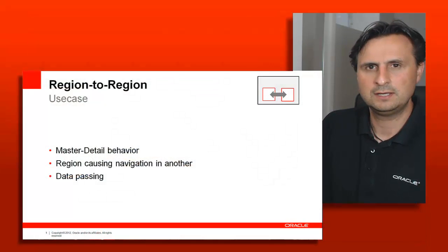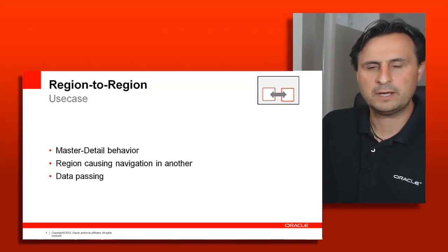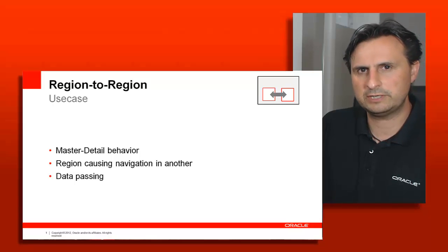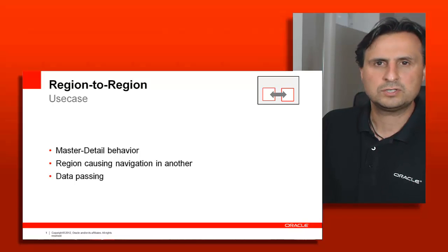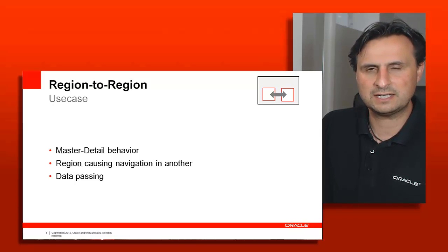Welcome to ADF TV. My name is Frank Nymphius and I'm from the Oracle JDeveloper and ADF Product Management Team. In this session we talk about region communication, and especially the channel of communication between two sibling regions. The use cases that require such communication might include master-detail correlation between two regions, one region triggering navigation in another, or just passing data into a region.